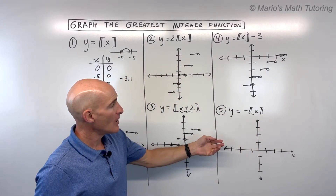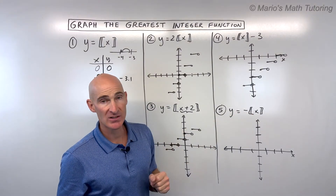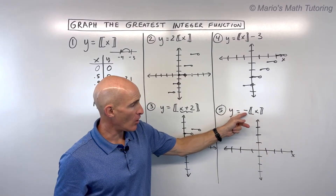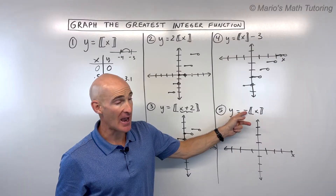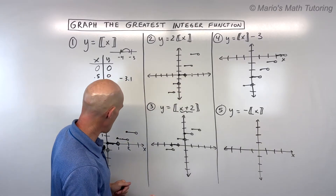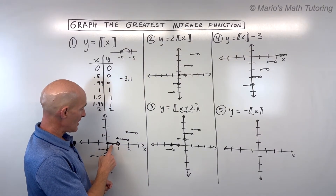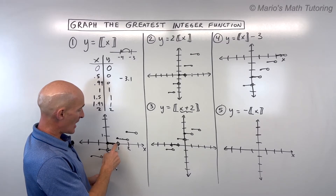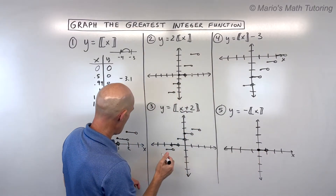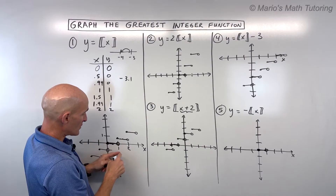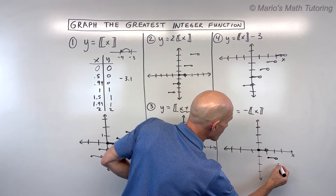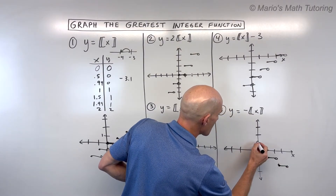For number 5, the negative in front of the greatest integer function is not grouped with the x, so it affects the y values — making all y values the opposite sign. When the y values are the opposite sign, it reflects over the x-axis. Referring to our parent function, the step on the x-axis stays where it is, closed on the left and open on the right, but the stairs now reflect downward. You can repeat the process from that point.